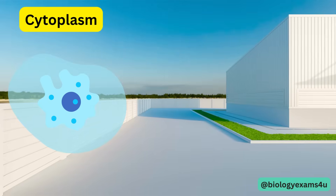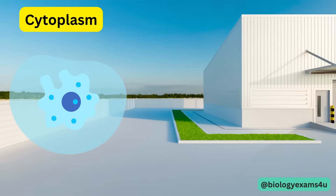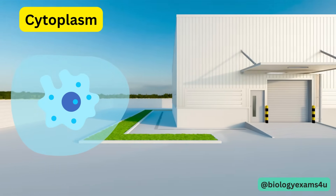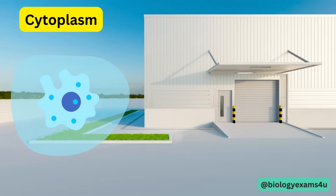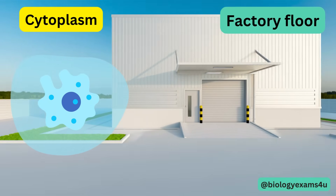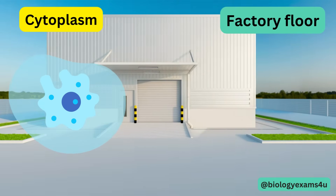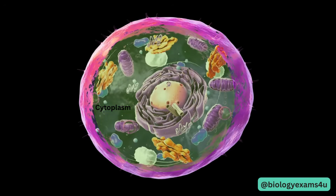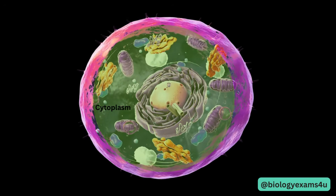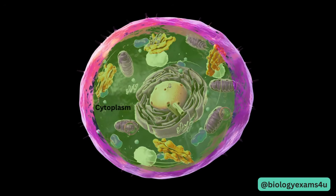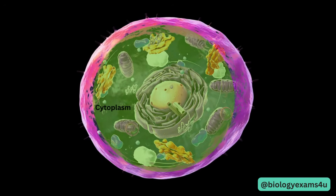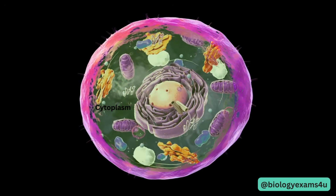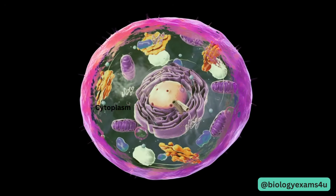Next is the cytoplasm, which is present in all types of cells. It can be compared to the premises or factory floor where everything is happening. It is the fluid-filled matrix of the cell where all organelles, water, salts, and various organic molecules are present.